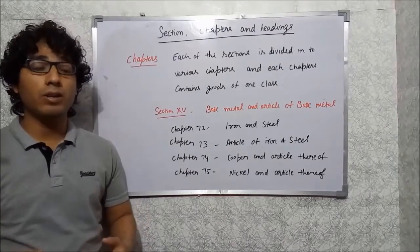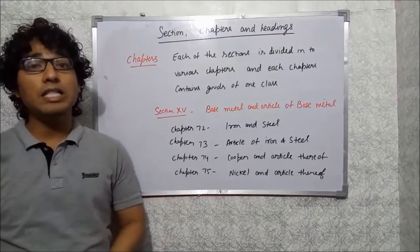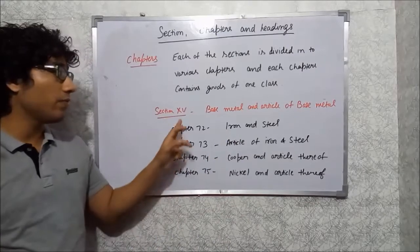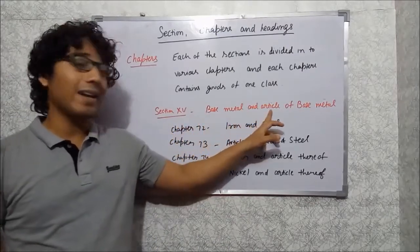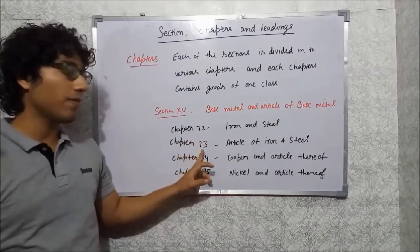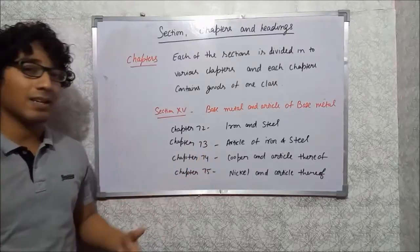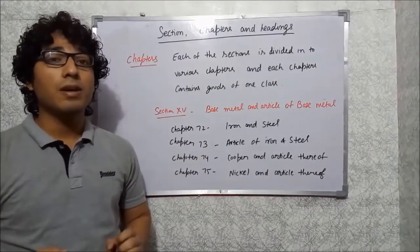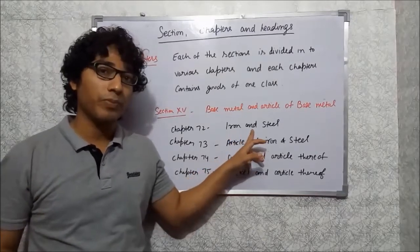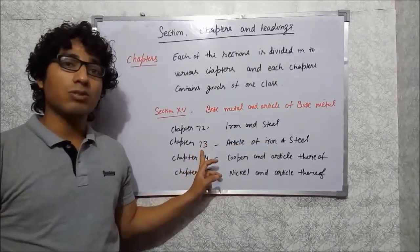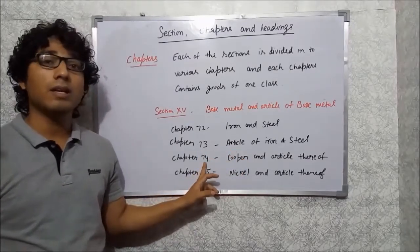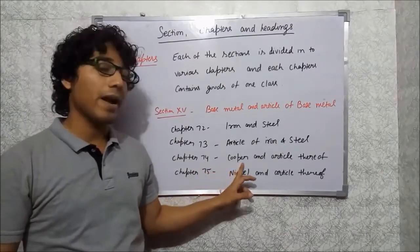Each section is divided into different chapters, and each chapter contains a particular class of goods. For example, section 15 — base metals and articles of base metal — is divided into chapters like chapter 72, 73, 74, 75, and so on. Chapter 72 contains goods relating to iron and steel; chapter 73 contains articles of iron and steel; and chapter 74 contains goods relating to copper and articles thereof.